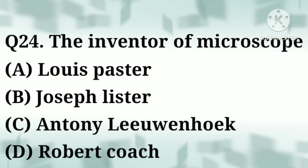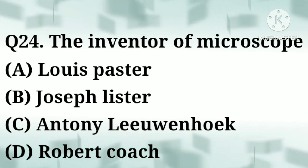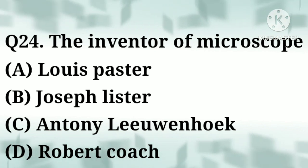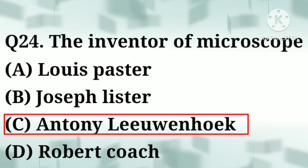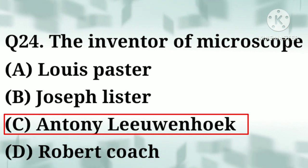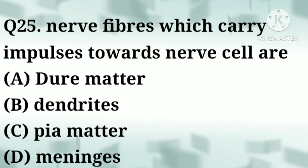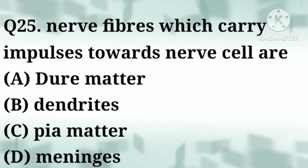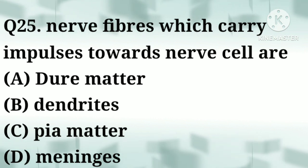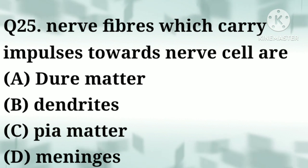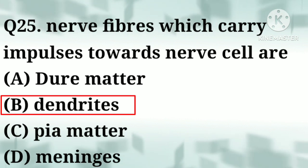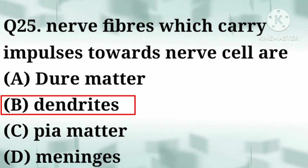Correct answer: option C, Antonie van Leeuwenhoek. Question number twenty-five: nerve fibers which carry impulses towards the nerve cell are — option A: dura mater, option B: dendrites, option C: pia mater, option D: meninges. Correct answer: option B, dendrites.